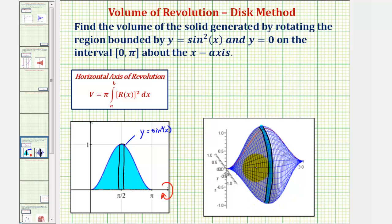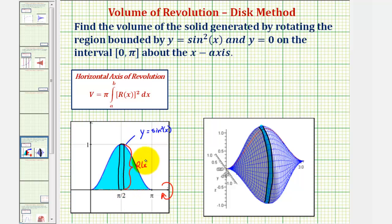To find the volume using the disk method, we use this formula here, where the volume is equal to pi times the integral of R(x) squared, integrated with respect to x from a to b, where R(x) would be the radius of any of the disks. Looking at this rectangle again, notice how this length here would be R(x) for this rectangle, which would just be the function value sine squared x. Also notice that the width of this rectangle would be delta x, which is the reason why we're integrating with respect to x.